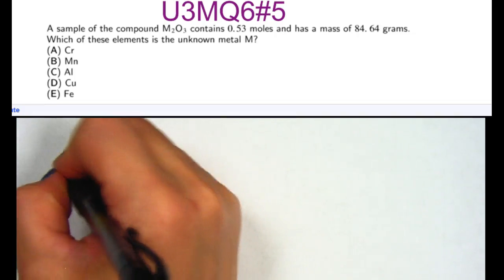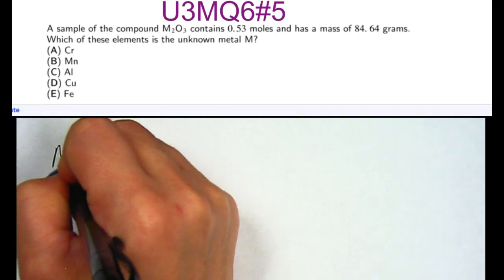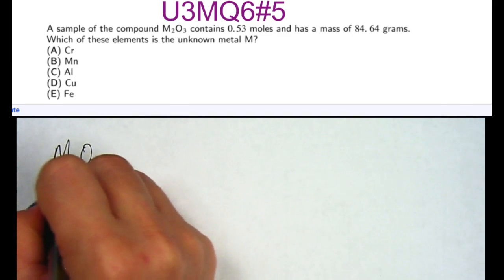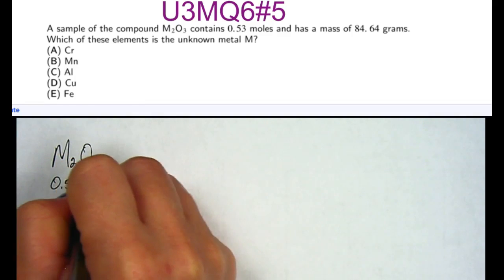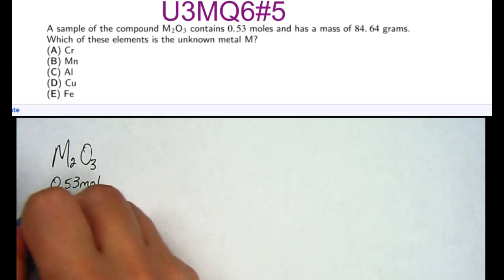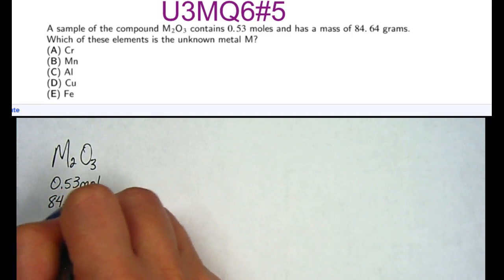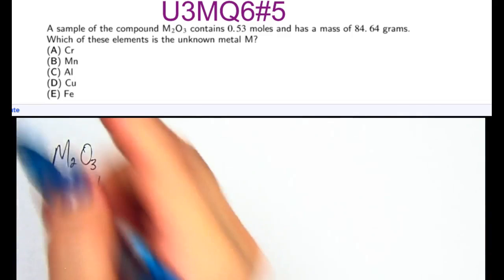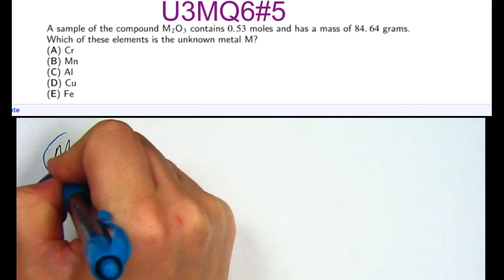A sample of the compound M2O3 contains 0.53 moles and has a mass of 84.64 grams. Which of these elements is the unknown metal M? We're trying to determine what M is.